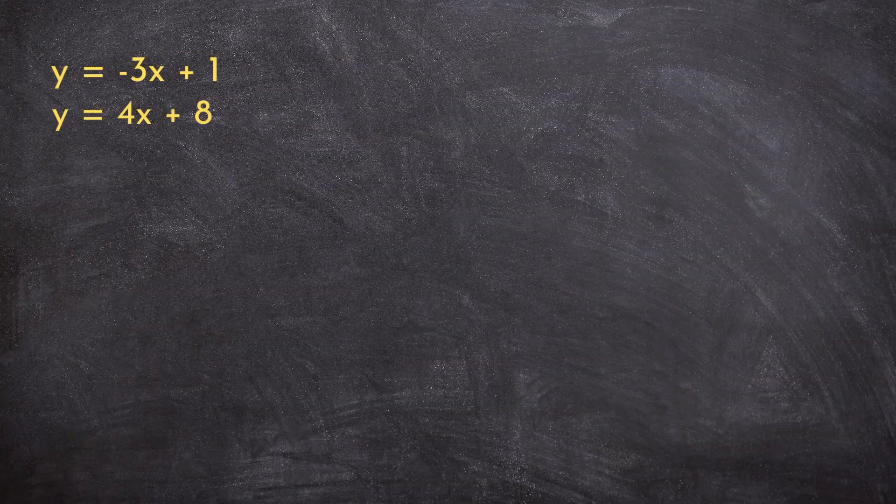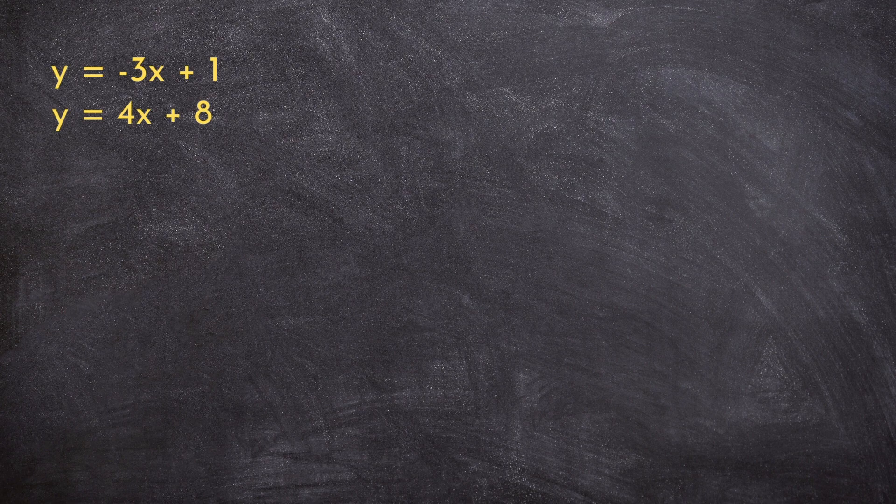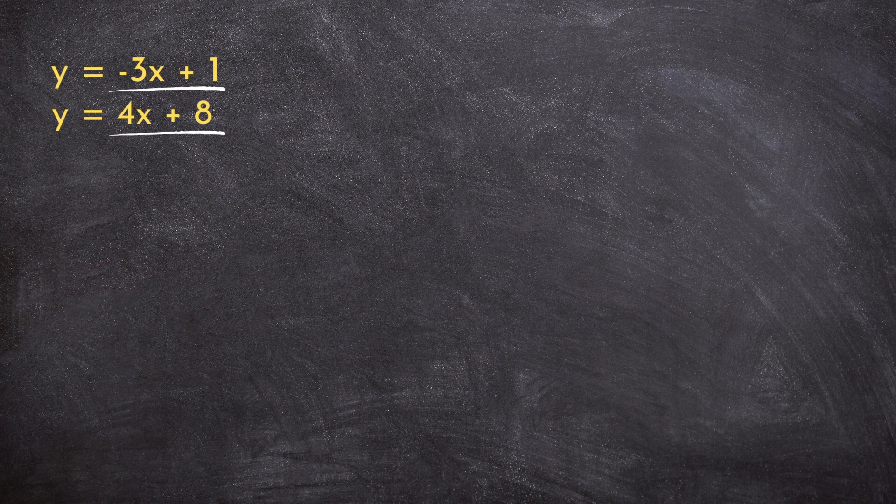Now, this is a great example, because it shows just how useful substitution really is. Here's another example that really tends to confuse students. So here we have y equals negative 3x plus 1 and y equals 4x plus 8. What do you do if you have two equations that both have y isolated? These types of systems tend to throw students for a loop, but it turns out solving them is actually a lot easier than you might think.